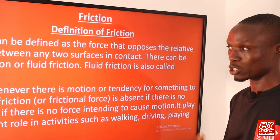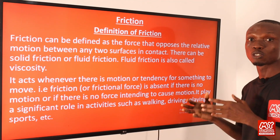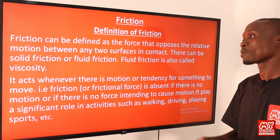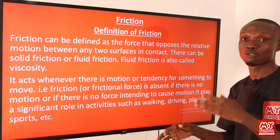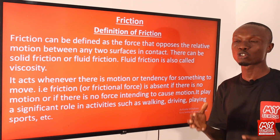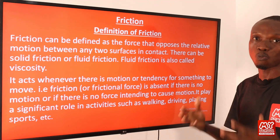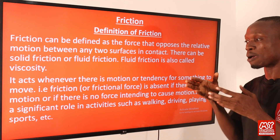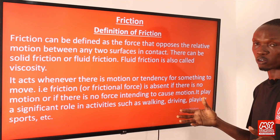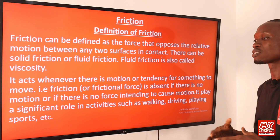When we say fluid friction, we mean the friction between a fluid and a solid object. When we say solid friction, we mean the friction between two solid objects. Friction comes into play whenever there is motion or a tendency for something to move, but friction is absent where there is no motion or no force intending to cause motion.